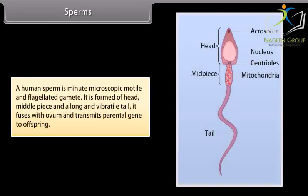A human sperm is a minute, microscopic, motile and flagellated gamete. It is formed of a head, middle piece, and a long vibratory tail. It fuses with the ovum and transmits parental genes to offspring.